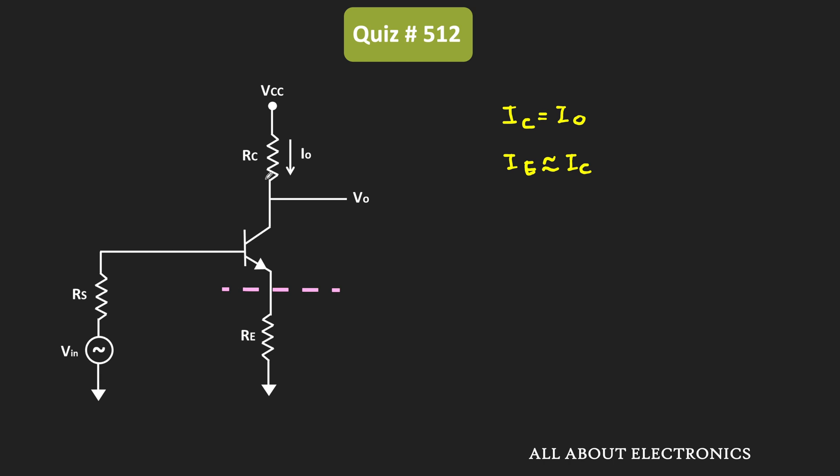That means here, the same output current will also flow through this emitter resistor. So here, the voltage drop across this emitter resistor is the feedback voltage of the given circuit. Let's say that is equal to Vf.